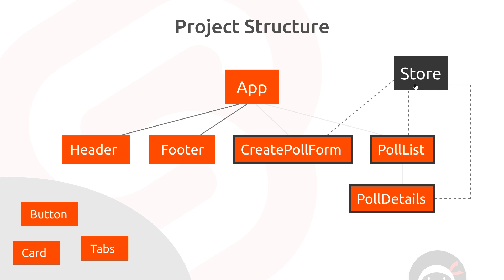We can do that in Svelte by using what's known as a store. We can create a central store of data, register all of our data there, and then subscribe to that store to get the data directly — for example in poll list. If we want to update that data we can do it directly — for example from poll details or from create poll form — and every time the data updates, whatever component is subscribed will get the updated data.